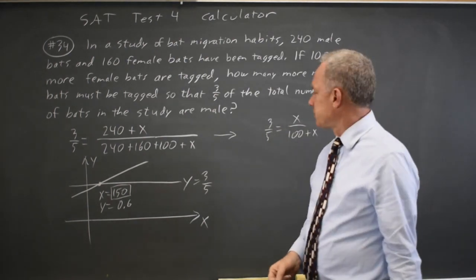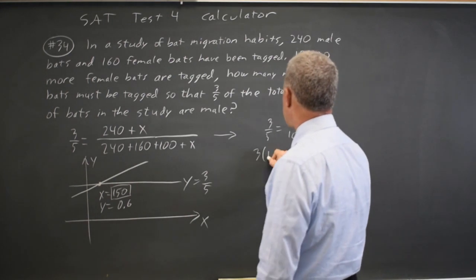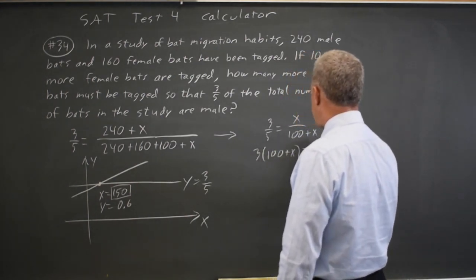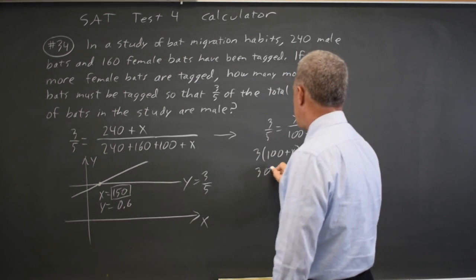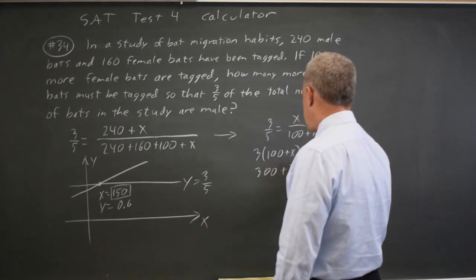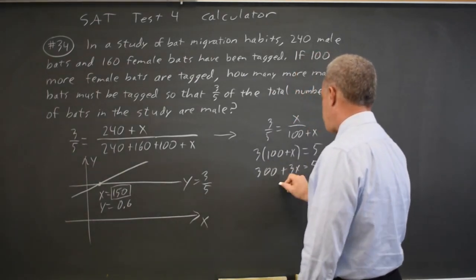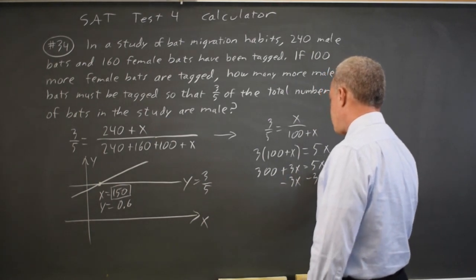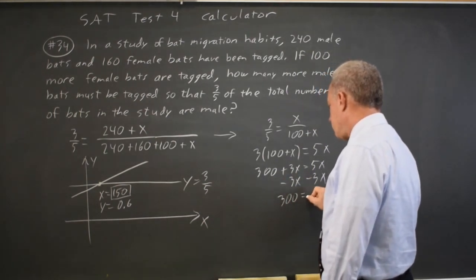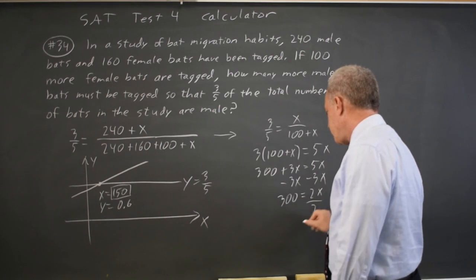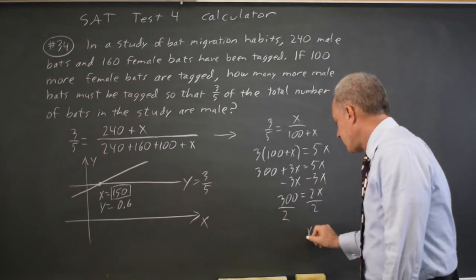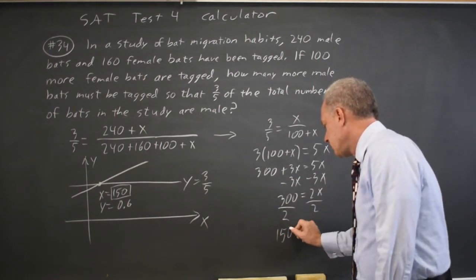And that's pretty easy to cross-multiply. So that's three times 100 plus x equals five times x. 300 plus 3x. Subtract 3x from both sides. 300 equals 2x. Divide by 2 to get x by itself. And x equals 150. Same answer.